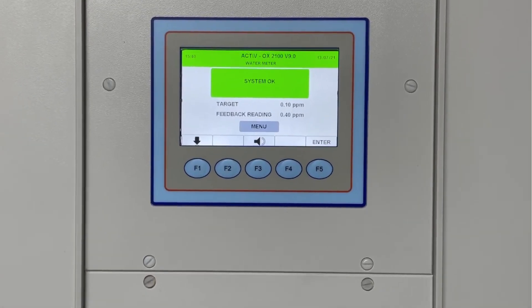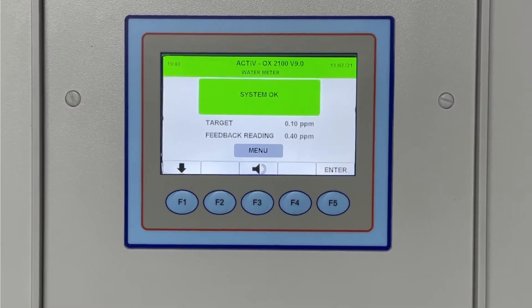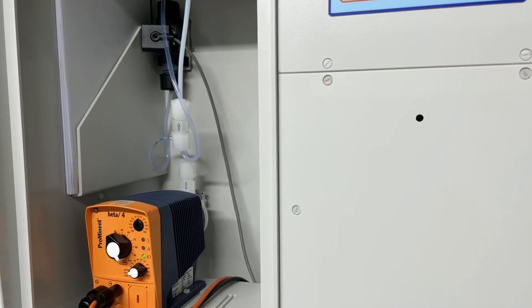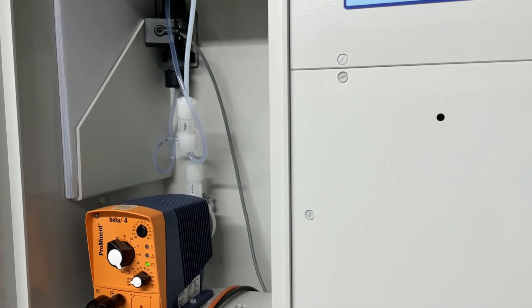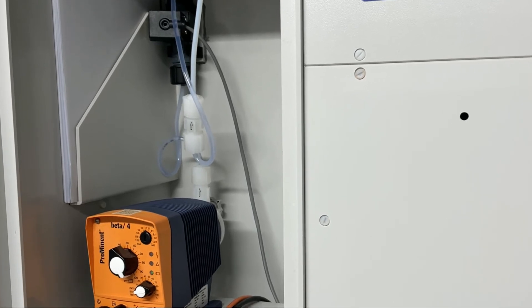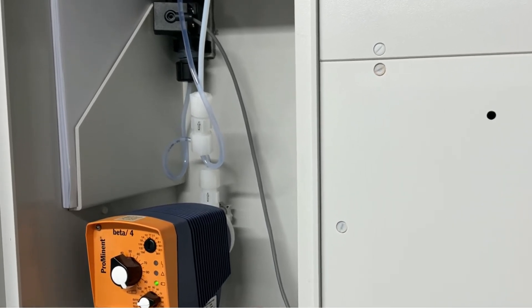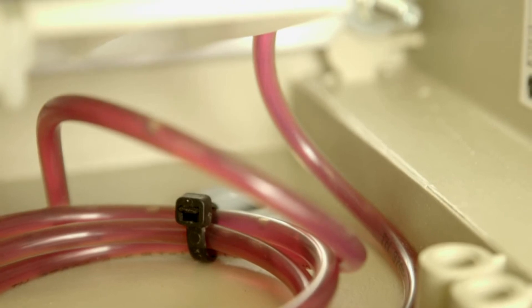The controller is programmed to deliver the required chlorine dioxide level and the dosage automatically adjusts depending on the water flow. There is no possibility of runaway dosage and the system is fail-safe because it can only dose when water is flowing.